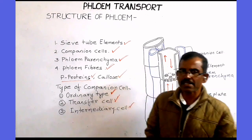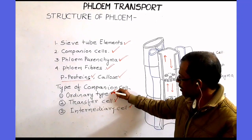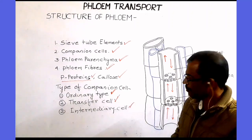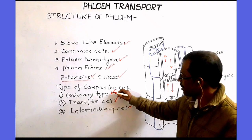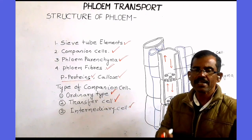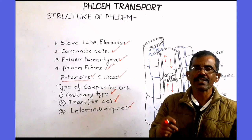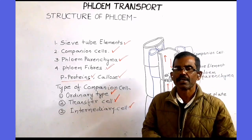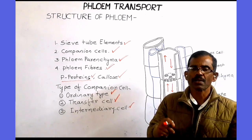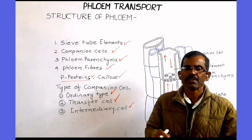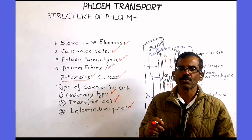Companion cells can be divided into three different types: ordinary companion cells, transfer cells, and intermediary cells. Ordinary type of companion cells have numerous plasmodesmatal connections only with the sieve tube elements. They do not have plasmodesmatal connections with the surrounding mesophyll cells, so they are simplistically isolated from the surrounding mesophyll cells.